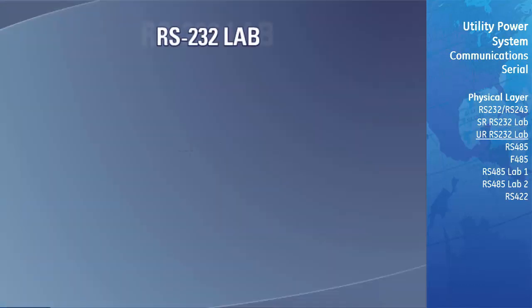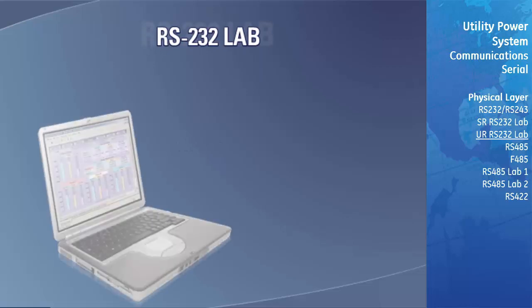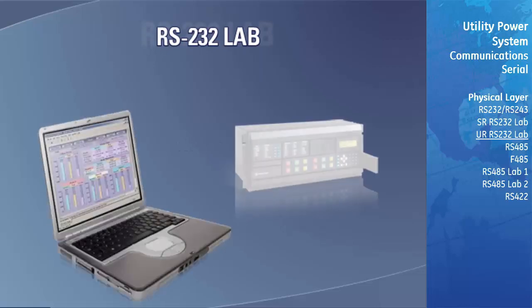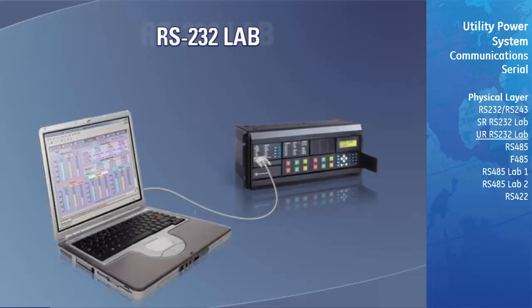In the following steps, we will show you how to configure the URPC program to communicate with the UR relay over an RS-232 serial connection. Before we can communicate with the relay, we must first connect a serial cable from a communication port on your computer to the front panel RS-232 port on your UR.